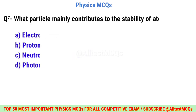Question number seven: What particle mainly contributes to the stability of atomic nuclei? Correct option is C: Neutron.